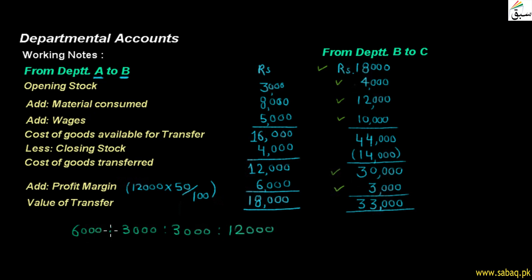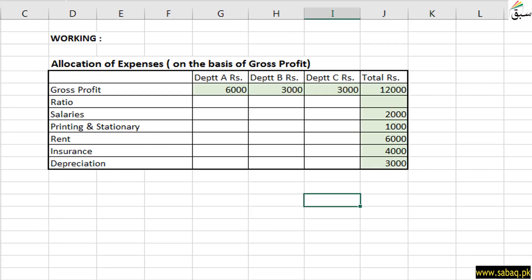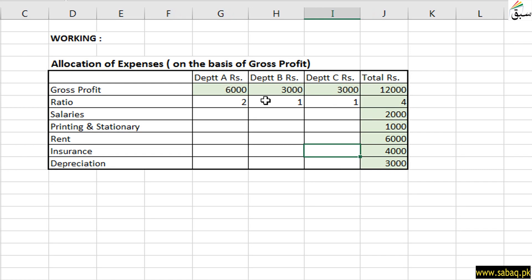We simplify the ratio by cancelling zeros. The ratio of 6,000 : 3,000 : 3,000 out of 12,000 simplifies as follows: 6,000 is 2 parts, 3,000 is 1 part, 3,000 is 1 part, and the total is 4 parts. So the ratio is 2 : 1 : 1 with a total of 4. We will use this ratio to allocate each expense among the three departments.